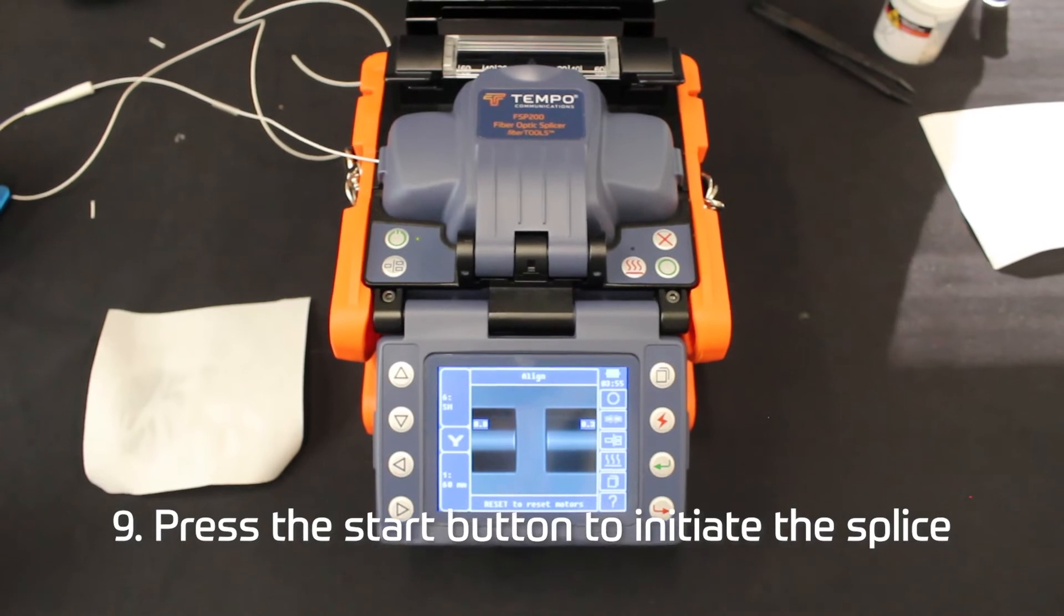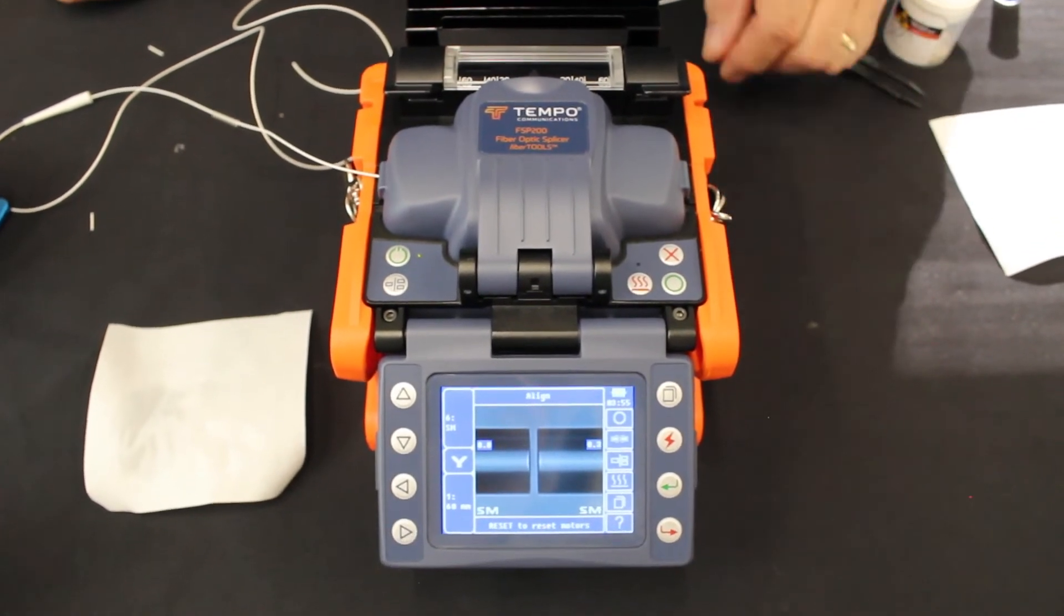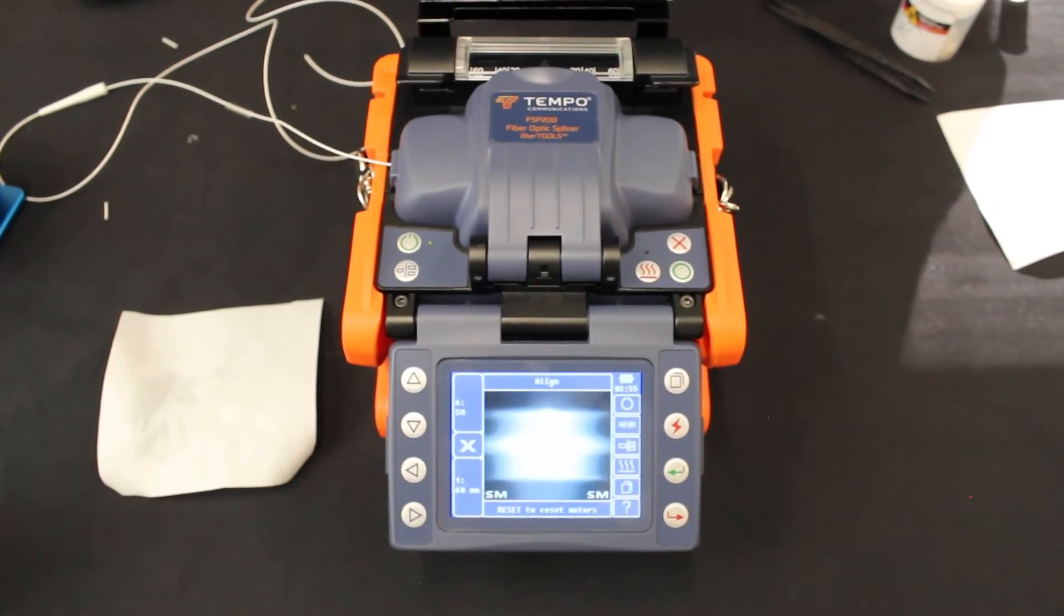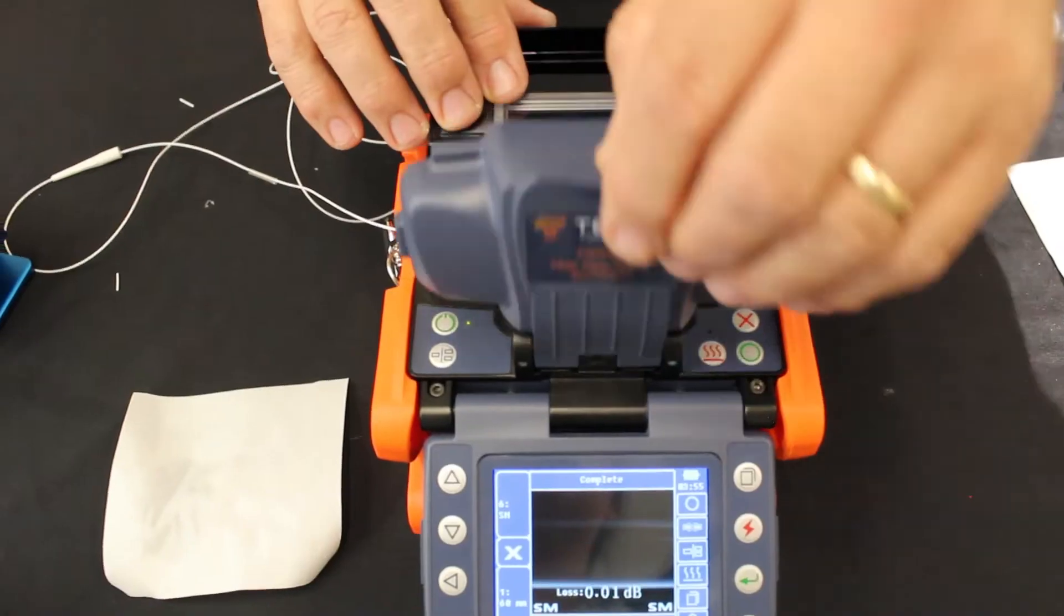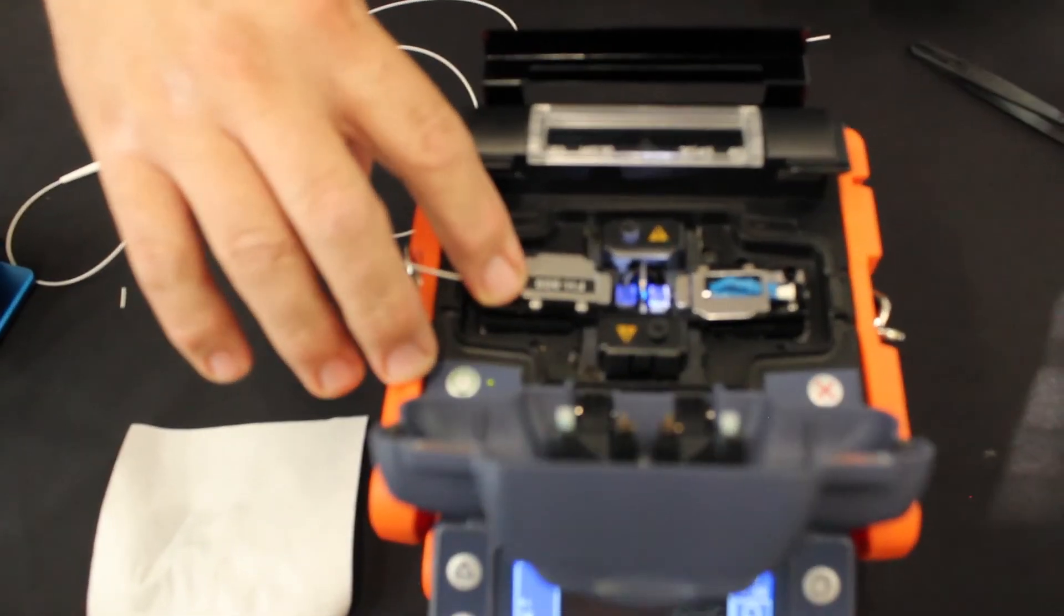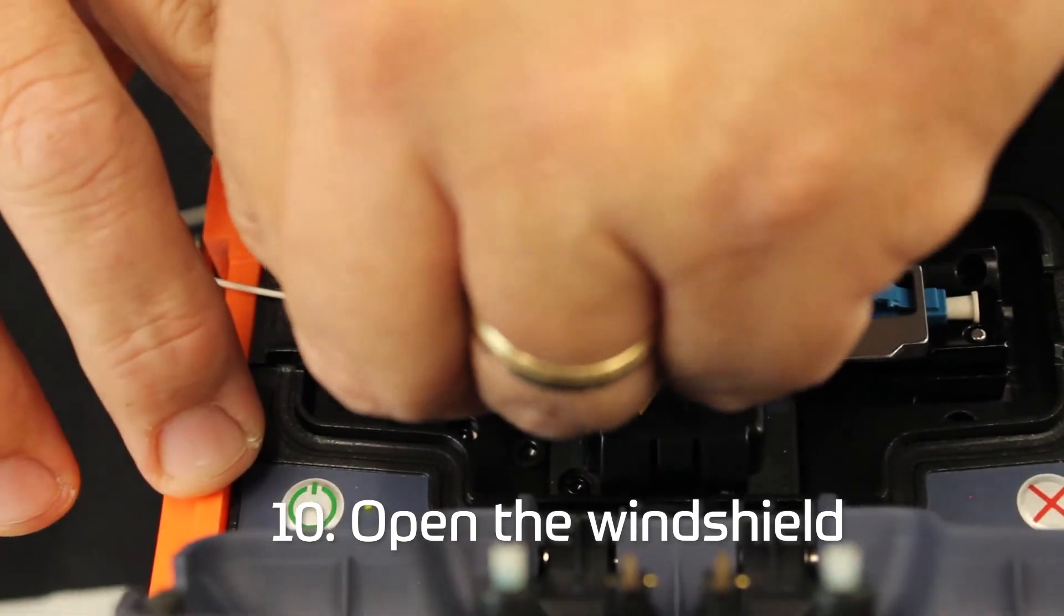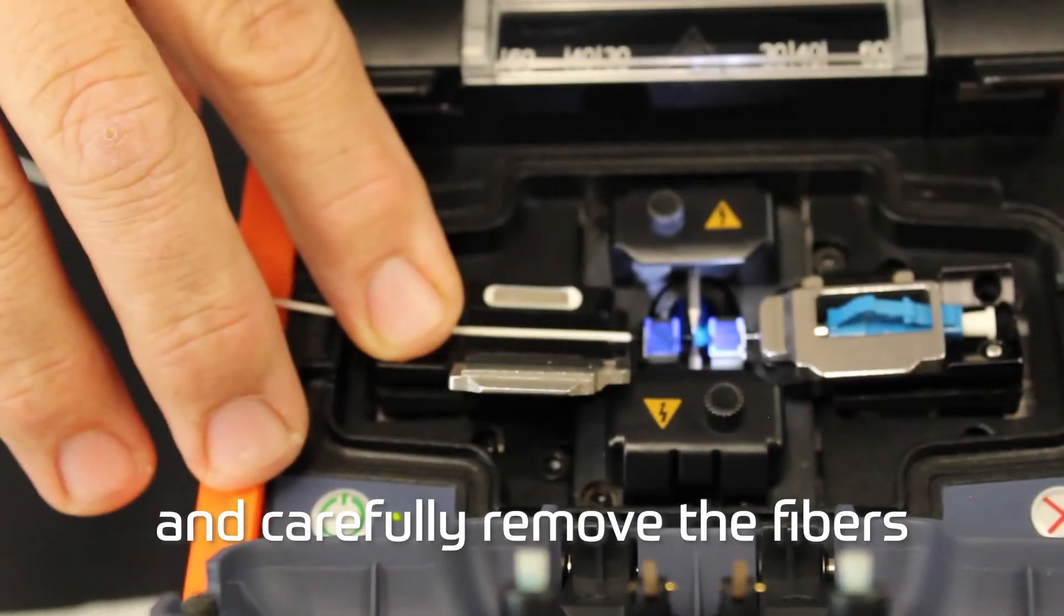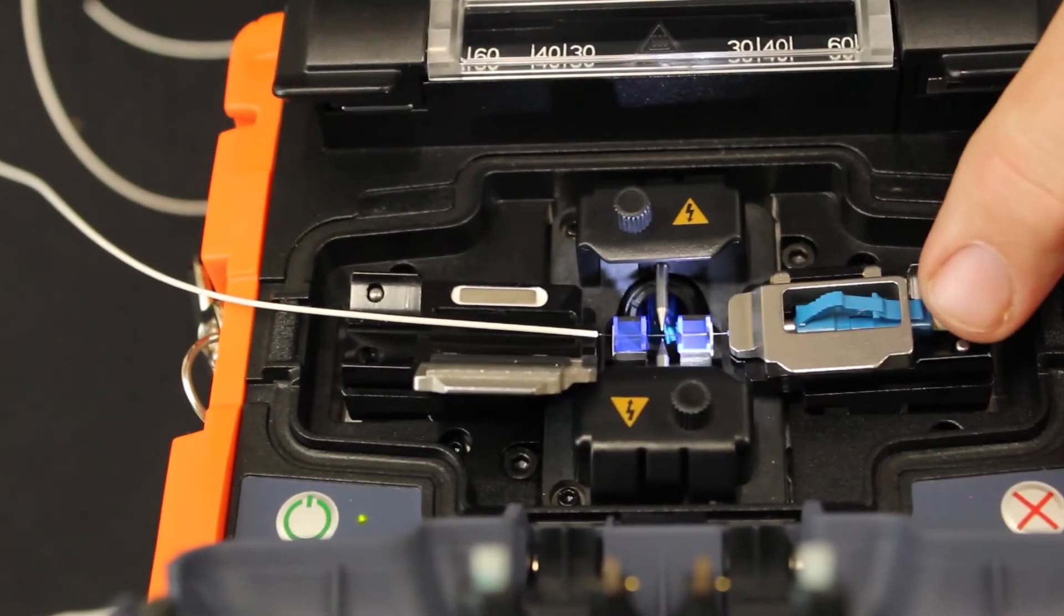Press the start button to initiate the splice if the auto-start is not enabled. When the approximate splice loss is displayed, open the windshield and carefully remove the fibers from the adapters one at a time.